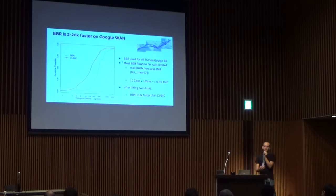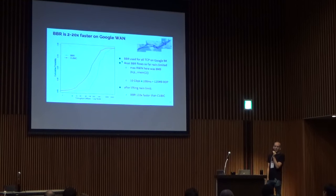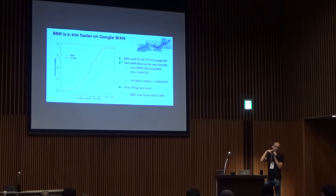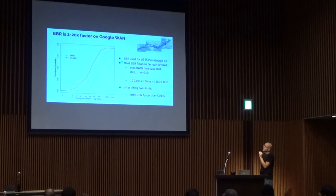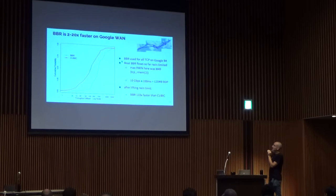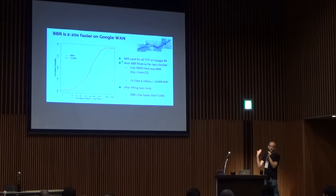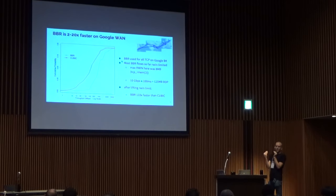We've actually deployed BBR for all TCP traffic running on Google's B4 network — the backbone that connects all Google data centers, carrying the majority of inter-datacenter traffic. With BBR we see about 2x to 20x the performance of cubic. Right now BBR performance is limited by the maximum receive window configured on these hosts, but once you lift that receive window limit, BBR gets about 100 times the bandwidth that cubic gets on this network.